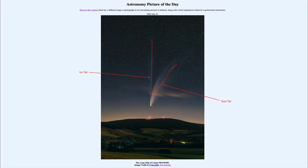The second tail is blue and goes almost straight up from the head of the comet — that is the ion tail. The ion tail is made of smaller particles, individual atoms and ions, which are much lighter than the dust particles and therefore are pushed straight back. They don't lag behind the orbit nearly as much as the dust particles do, which is why this tail is much straighter. There is definitely a very clear differentiation between the two tails in this image.